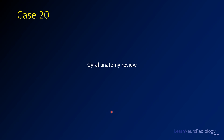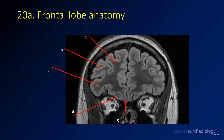For this final case, it's not going to be so much of a single case, but it's going to be a quick review of gyral anatomy within the brain. What I'm going to do is show you a single slice or an image through the brain. There are some numbered arrows, and I want you to follow along as we try to name them.